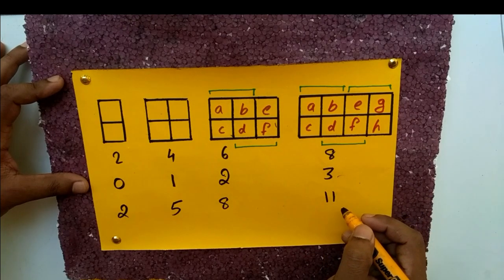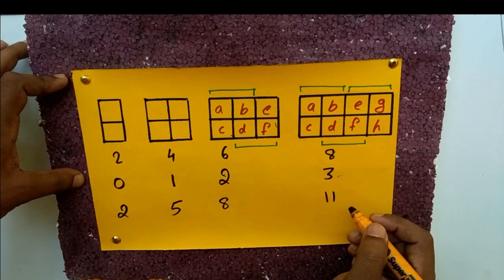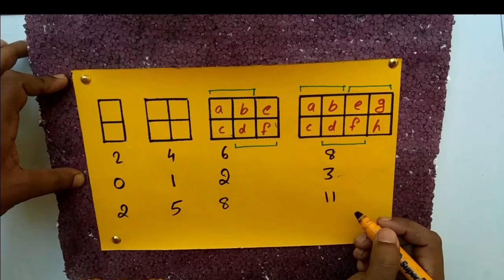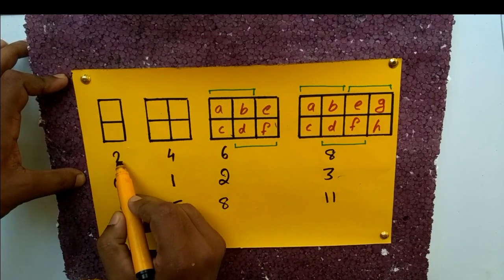Let's try now the 4th step. Continuing this pattern, is each sequence of numbers an arithmetic sequence? When we check this out: